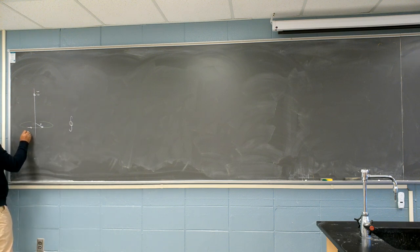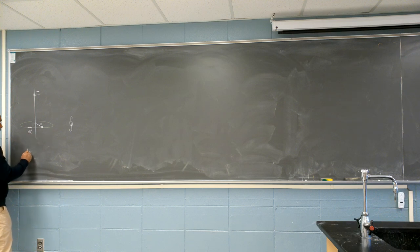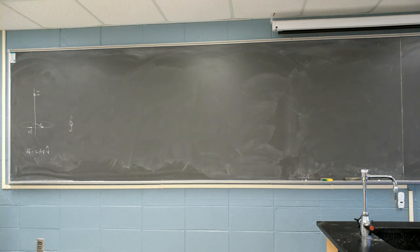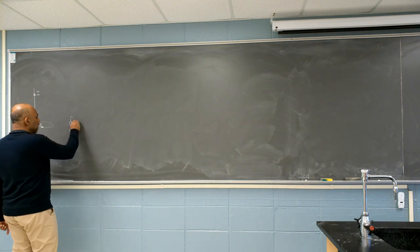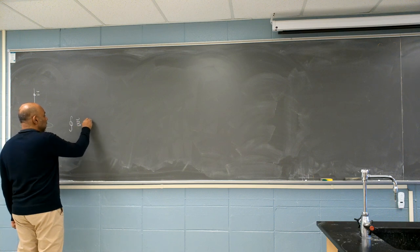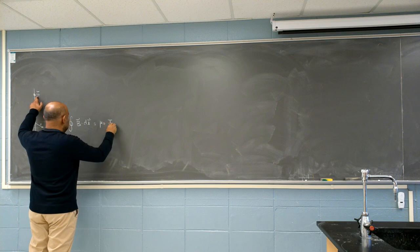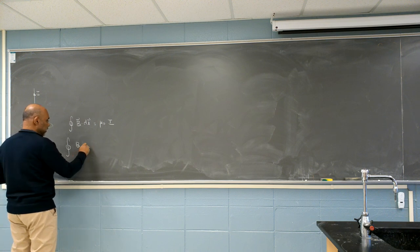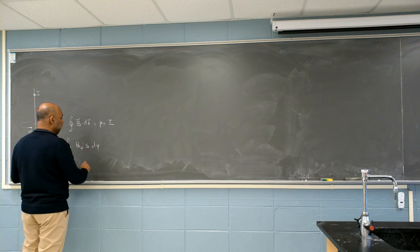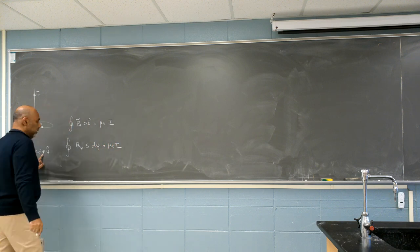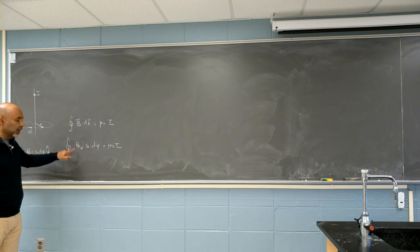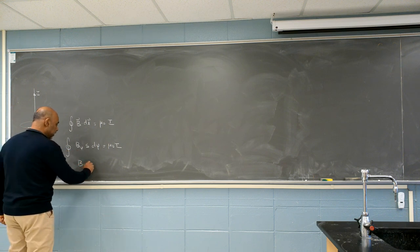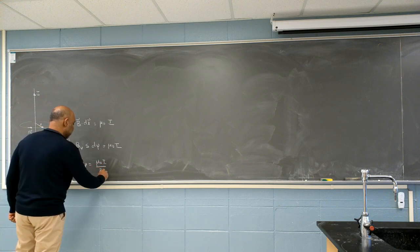And I'm going to integrate along dL. dL is what? s d phi phi hat. Right? So B dot dL, for one thing, it is mu zero times this i. On the other hand, it is B, the phi component of B, times s d phi, plus mu zero i. None of this is phi dependent, because the magnitude should be constant. And so, I would get that B phi equals mu zero i over two pi s.